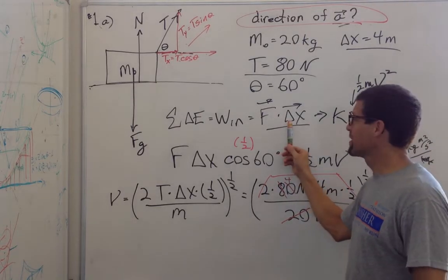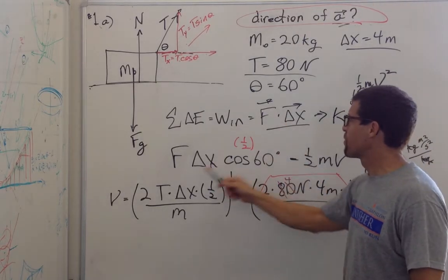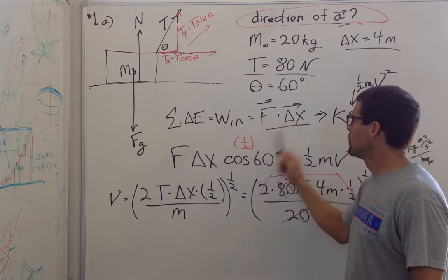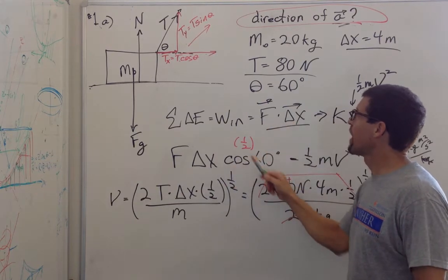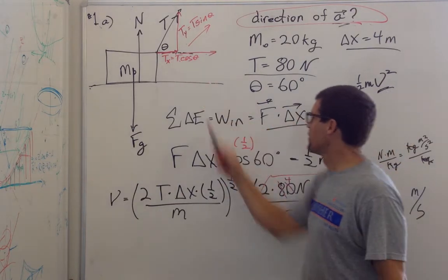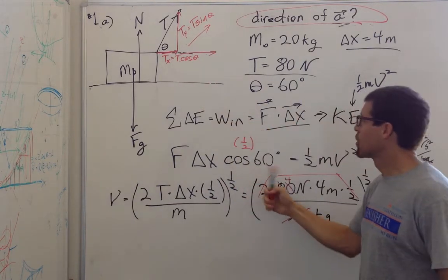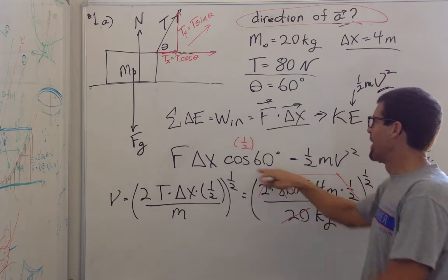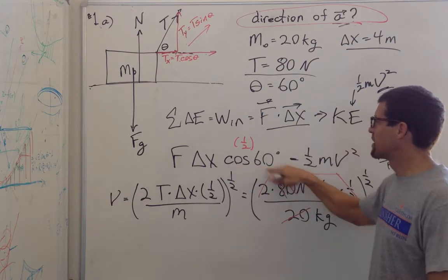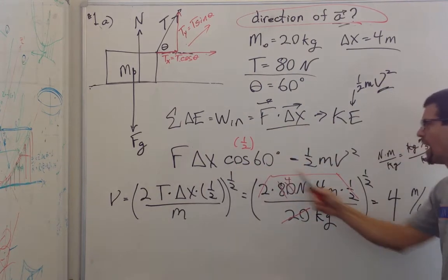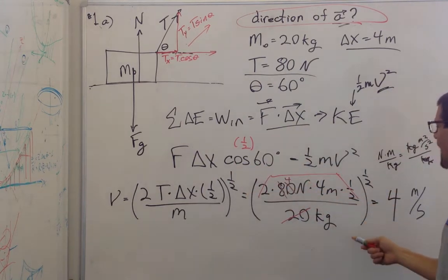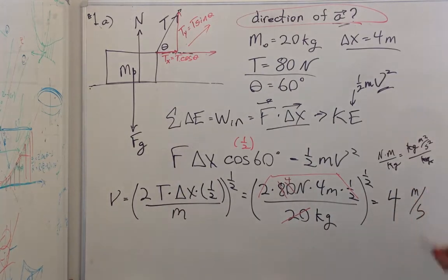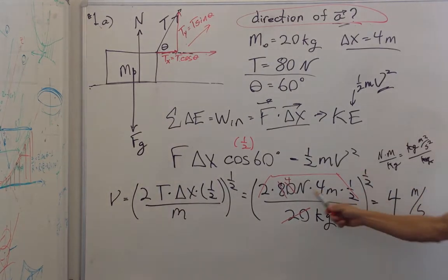Remember, this is a dot product. The dot product is the magnitudes times the cosine of the included angle — that's cosine of the angle between them. Cosine of 60 degrees is one half. And we solve for the velocity and get four meters per second.